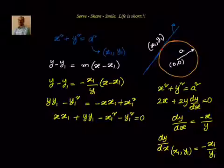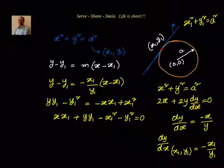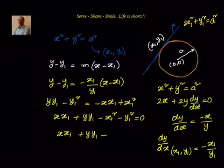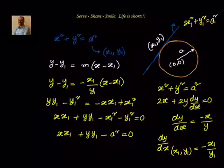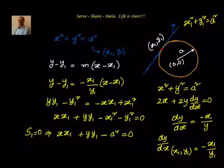But we know that if (x1, y1) is a point on the tangent line, it is also a point on the circle. Therefore it must satisfy the circle equation, so x1² + y1² = a². Substituting that, we get: xx1 + yy1 − a² = 0. So the tangent to the circle at point (x1, y1) — also called S1 = 0 — is xx1 + yy1 − a² = 0.